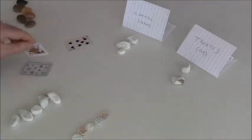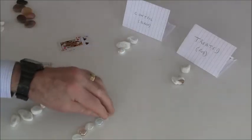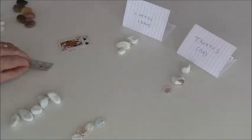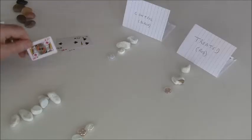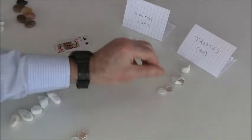The first one goes into the control. That's a red card, so that goes into the treated. The next one is a black card, so that goes into the control. And we know now that the next one must be a red card going into the treated.